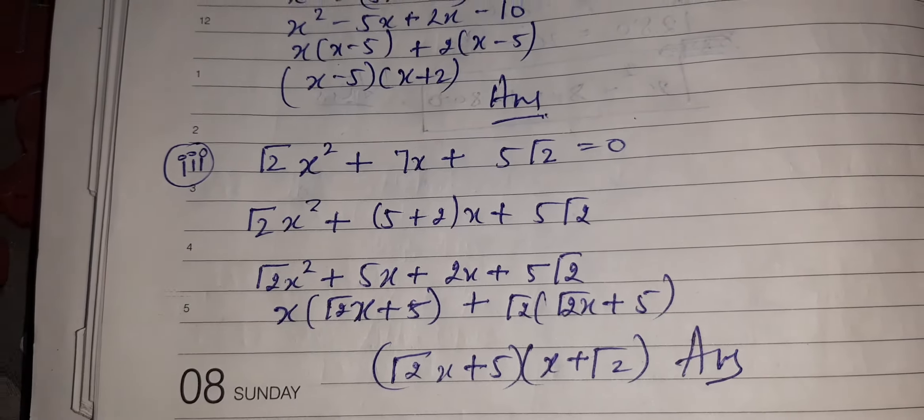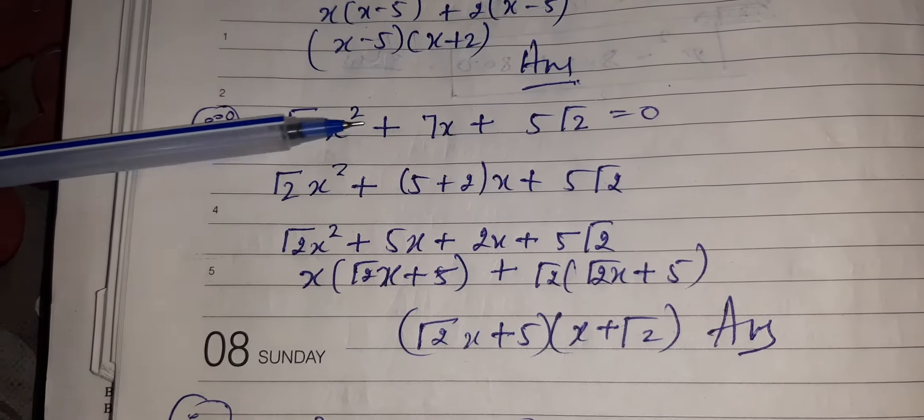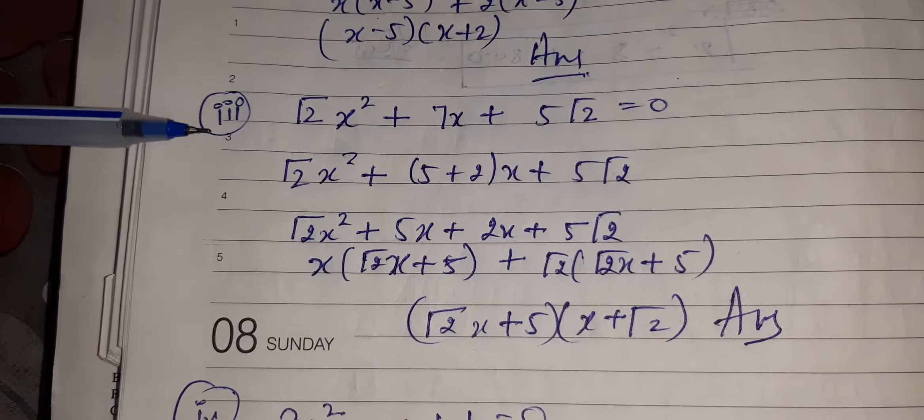Second part do it as homework. Third part: √2x² + 7x + 5√2 = 0. A very important question.